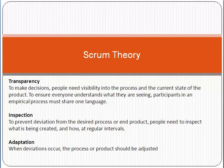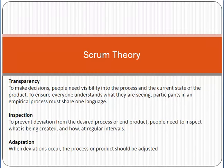Transparency means that whenever decisions are being made, timelines are set, or communication is happening among the team — the product owner, scrum master, and scrum team — everything should be crystal clear. Things should not be hidden or kept under the table. All problems should be openly discussed among team members, with no ambiguity or miscommunication.